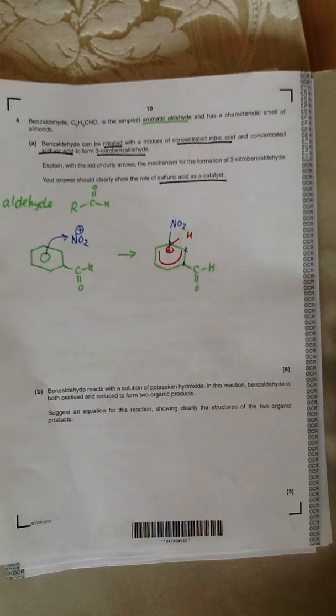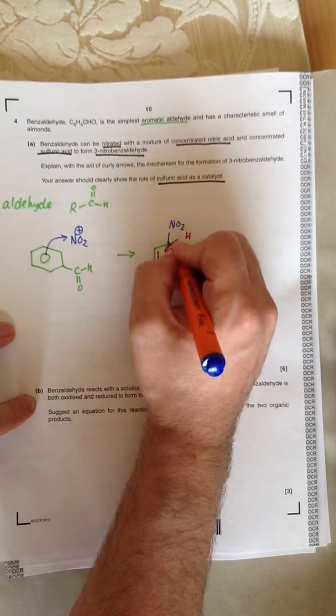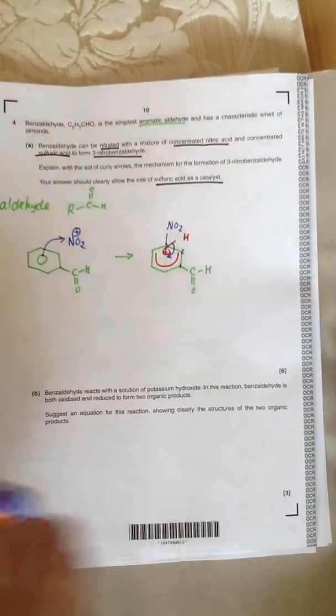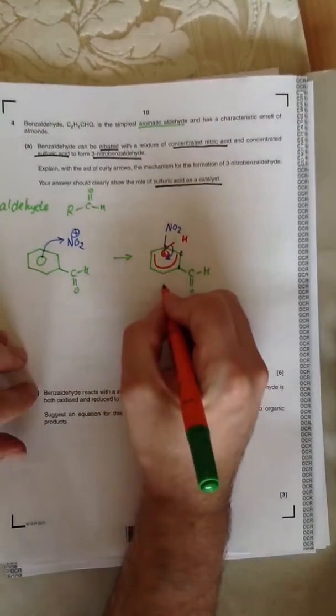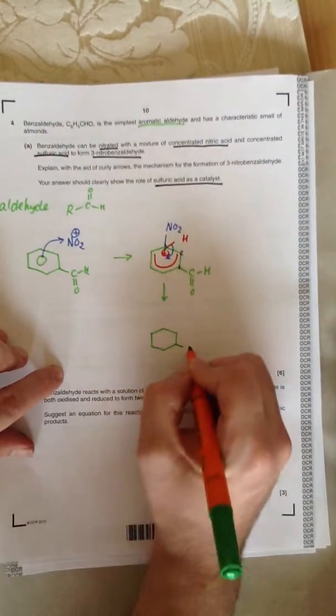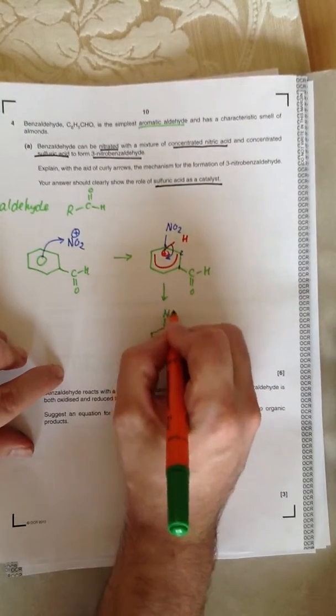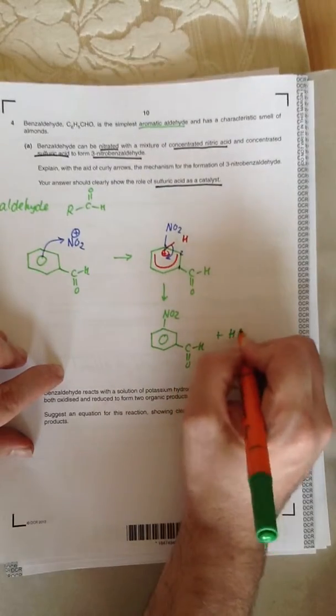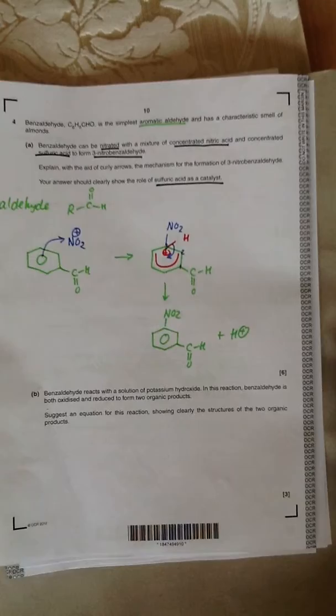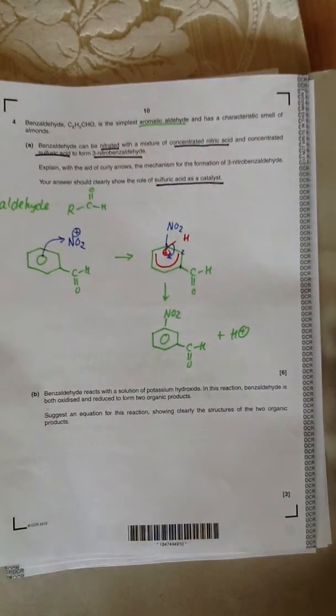The last part of the mechanism is the electrons from the bond to the hydrogen return to the aromatic ring. So the product we get is our nitrobenzaldehyde with the nitro group in the three position, plus H+. Now, the question also says at the end, your answer should show clearly the role of sulfuric acid as a catalyst.